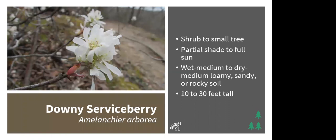Serviceberry is a shrub-to-small-tree growing 10–30 feet tall. It tolerates moist to dry medium soil and does well in loamy, sandy, or rocky soils, giving it broader adaptability. It thrives in partial shade to full sun and often has multiple stems. Like dogwood, it flowers before leafing out — making it another stunning substitute for callery pear. It supports 91 caterpillar species including the red-spotted admiral, and its fruit is eaten by cedar waxwings and Baltimore orioles.